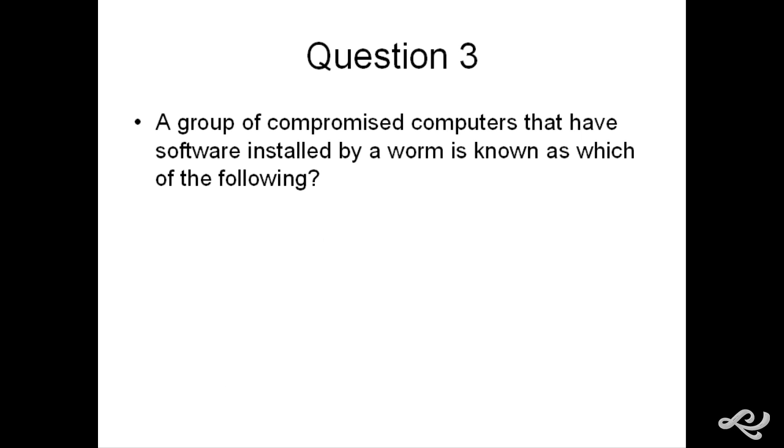Question 3. A group of compromised computers that have software installed by a worm is known as which of the following? A, a botnet. B, a virus. C, a honeypot. Or D, a zombie.